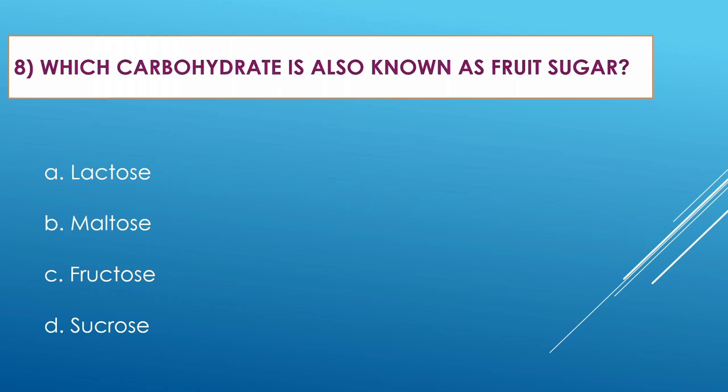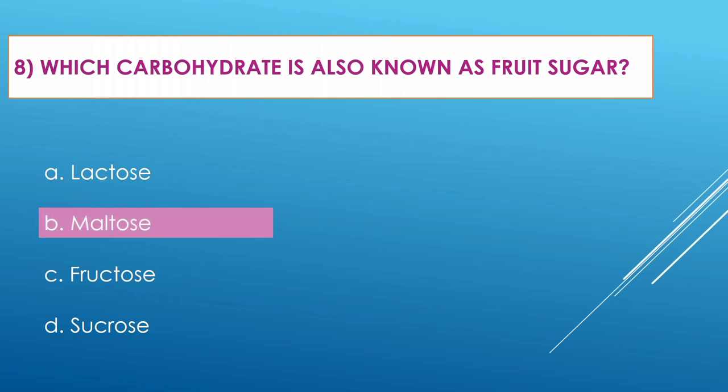Question number eight: Which carbohydrate is also known as fruit sugar? Option A: lactose. Option B: maltose. Option C: fructose. Option D: sucrose. The correct option is fructose, which is also known as fruit sugar.